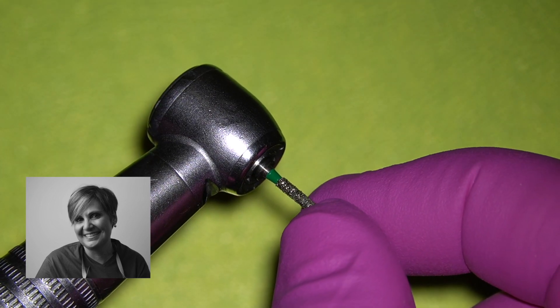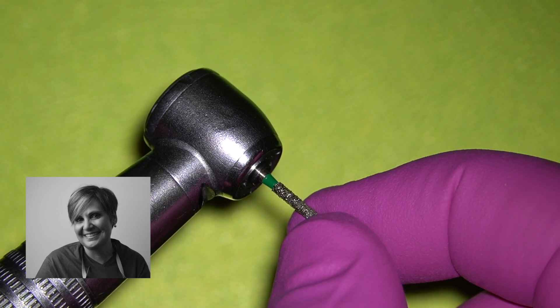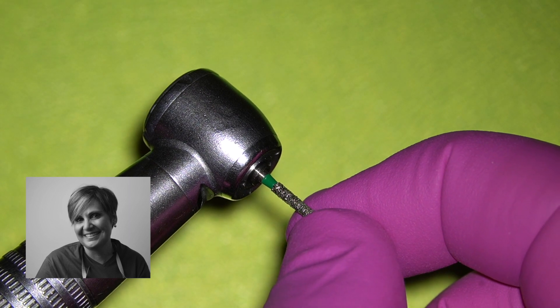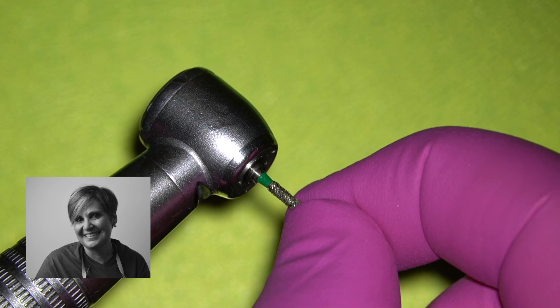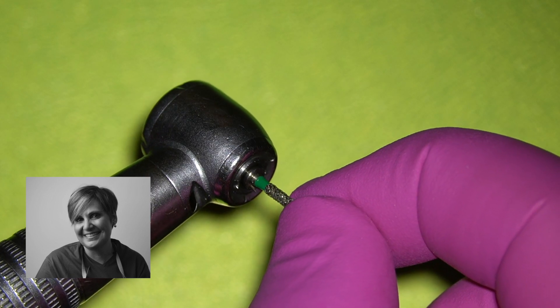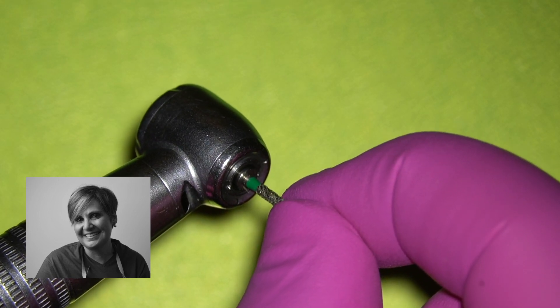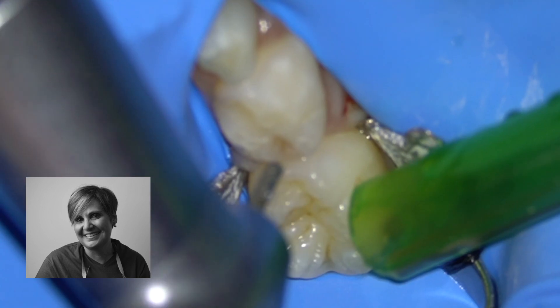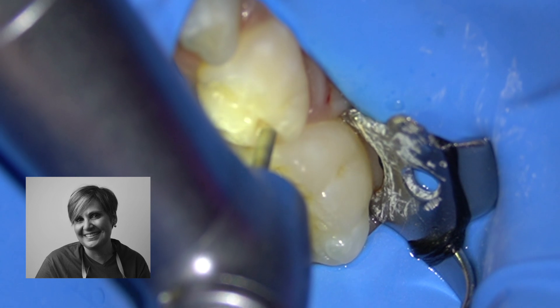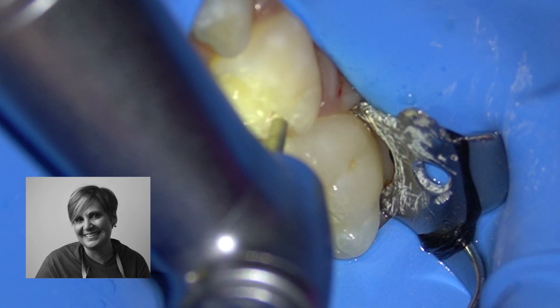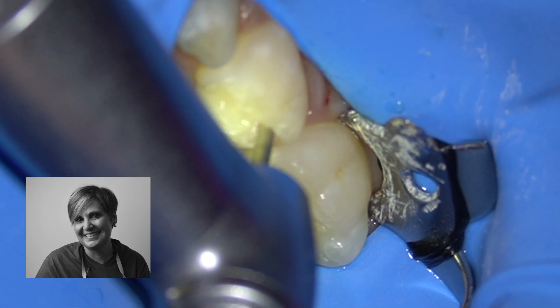A cheap bur which is not securely placed in the handpiece hasn't a stable rotation and we can't be accurate in removing dental caries. Let's see now two different videos with the red handpiece and two different burs.